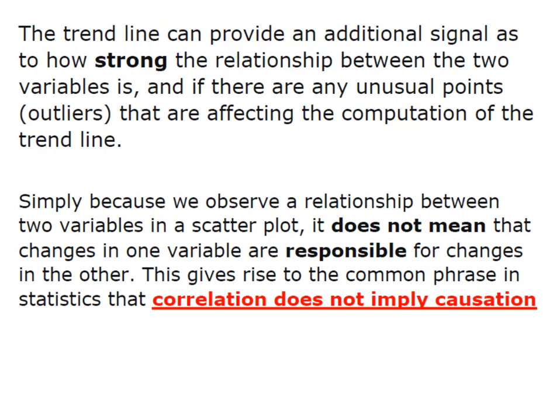For example, high blood pressure. We could plot fat intake and high blood pressure and that might look to be very correlated. However, there are other factors at play — age, genetics, weight. So simply because that relationship exists in the scatter plot, it does not mean that there is causation. In other words, the change in one variable is not completely responsible for the changes in the other.